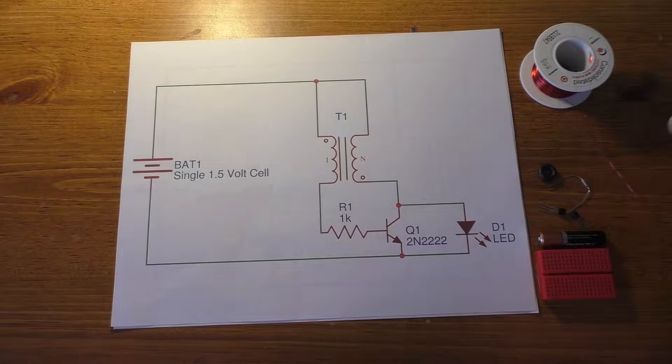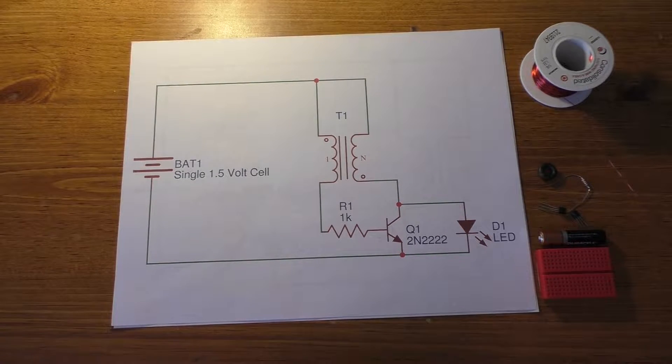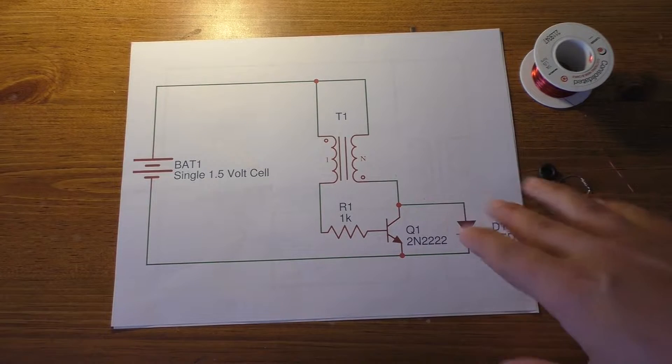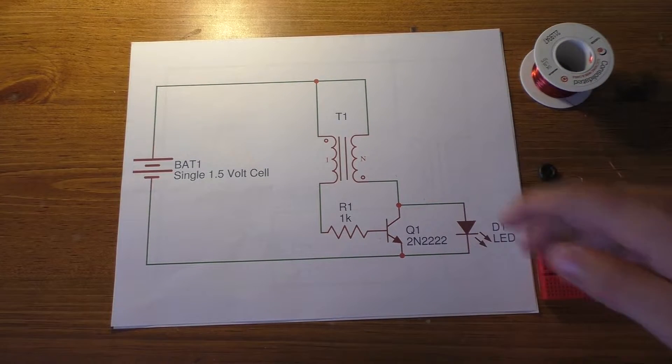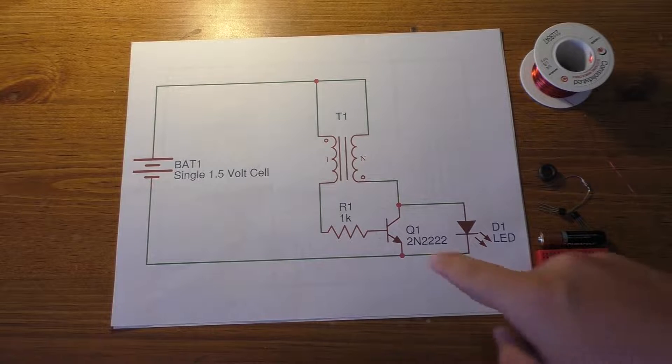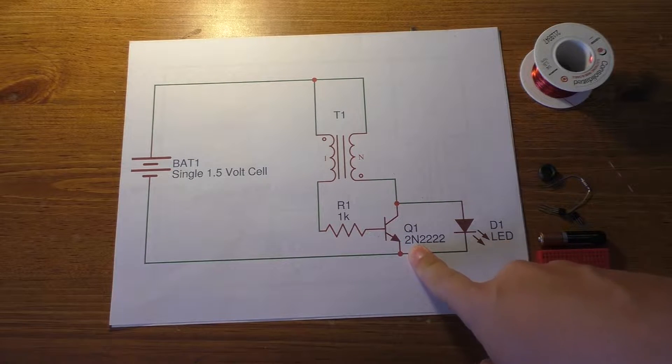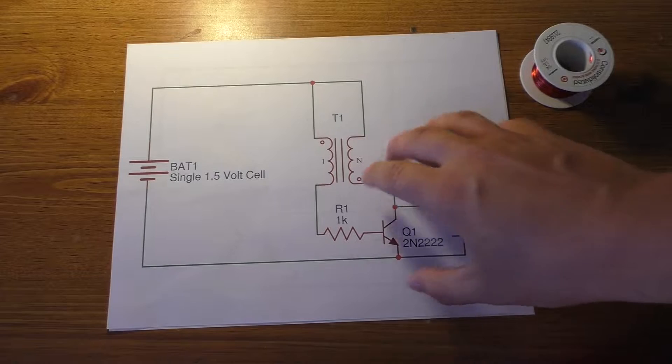Usually when you're talking about a Joule Thief, this is the typical circuit that comes to mind with an NPN transistor here. I have a 2N2222. That's what I put in the schematic here.